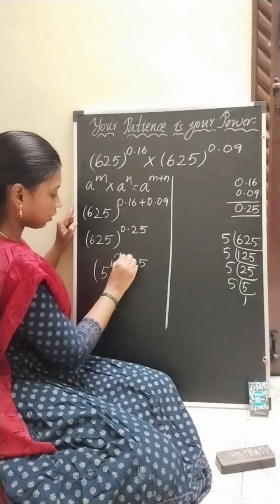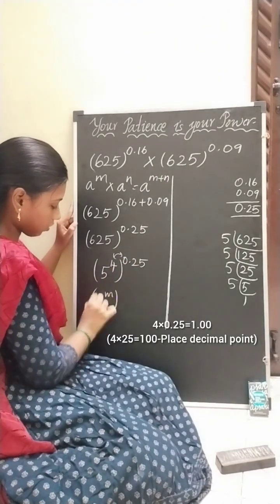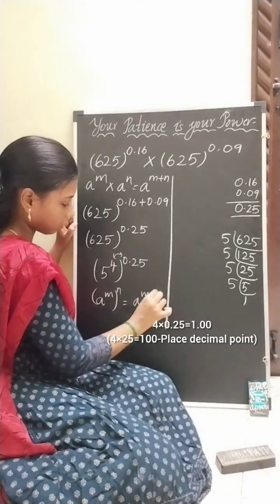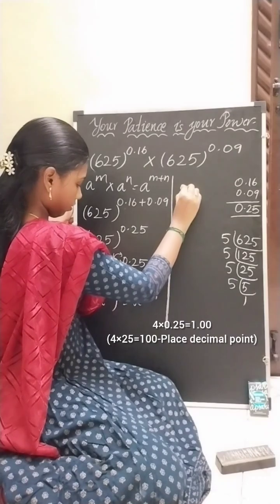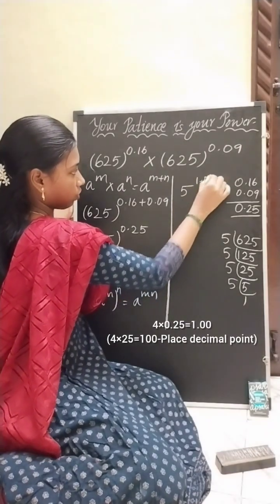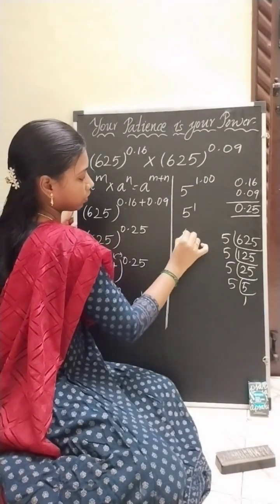What is 4 times 0.25? We are using this law. Therefore, you will be getting 5 to the power 1.00, which is equal to 5.